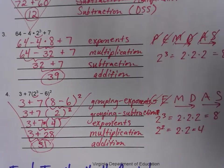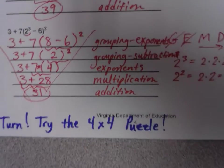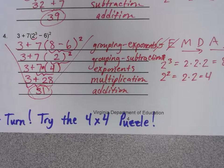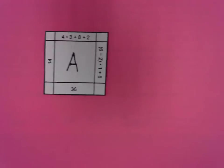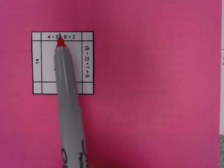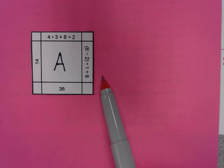Next up, it's your turn — you get to try the four-by-four puzzle. Every single puzzle piece — there are 16 pieces altogether — has two problems on it, two expressions that we need to simplify. So each one has an expression at the top and one on the side.